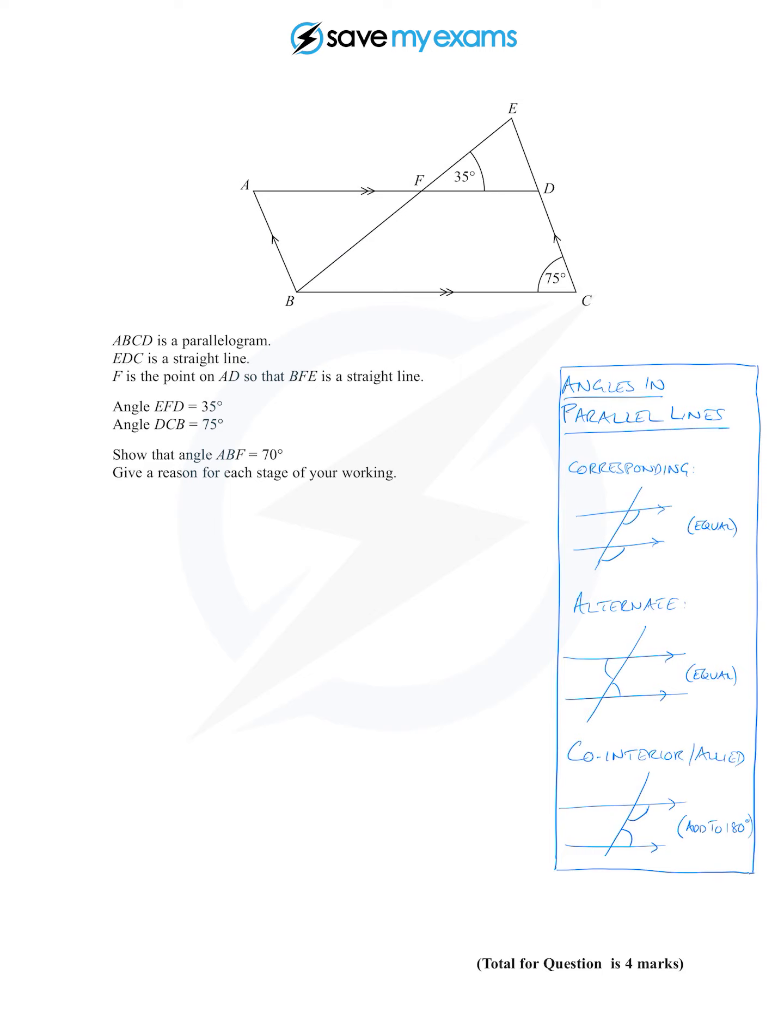So first of all, let's say that FBC, that's this angle here, is equal to EFD which is 35 degrees. So that one is 35 and that's because they are corresponding angles. Please don't write F angles, you won't get the mark.